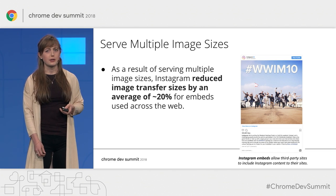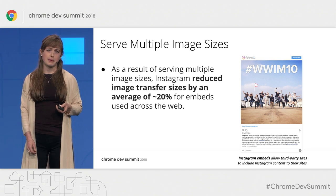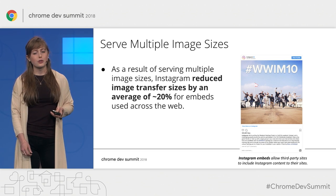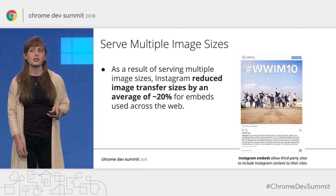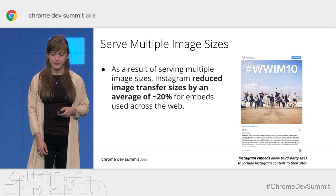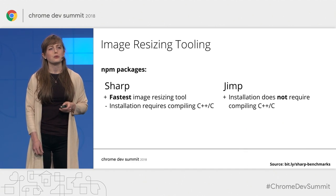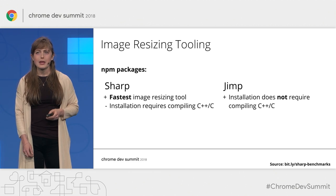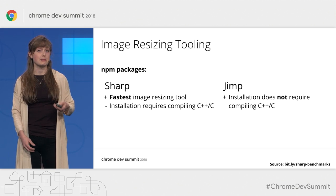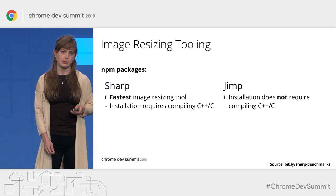One use case where Instagram was able to measure the impact of serving multiple image sizes was with their Instagram embeds, which allow third-party sites to display Instagram content on their own site. As a result of serving multiple image sizes, Instagram was able to reduce image transfer size by 20% for their embeds. Two popular tools for image resizing are Sharp and Jimp. The biggest difference is that Sharp is faster at image processing, however it requires that you compile C and C++ to install it.